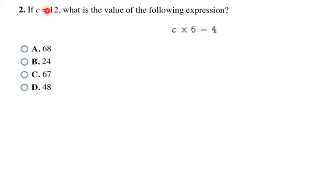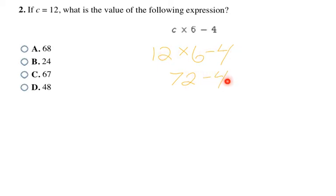This next problem tells us C is 12 and wants us to find the value of the expression. Substituting 12 for C, I have multiplication and subtraction. According to order of operations, I do multiplication first: 12 × 6 = 72. Then I rewrite 72 minus 4, keeping everything neat and orderly so I don't make careless mistakes. 72 − 4 = 68, making the final answer choice A.